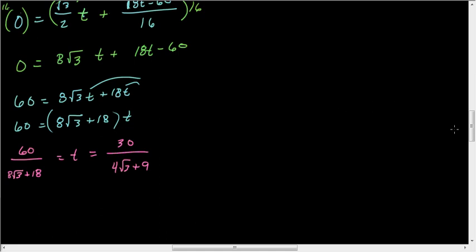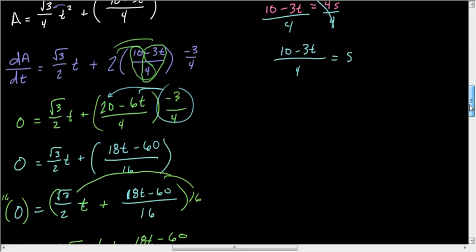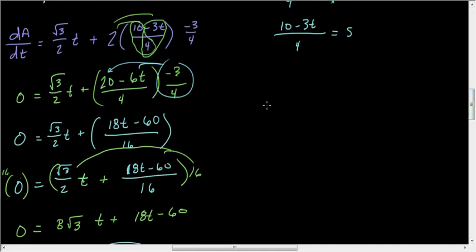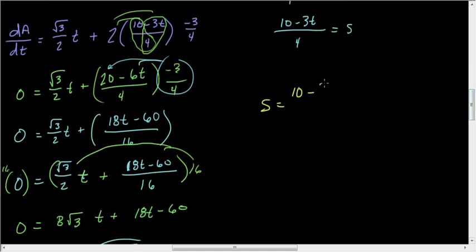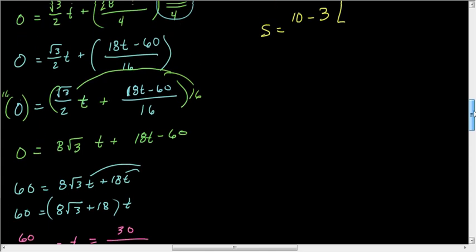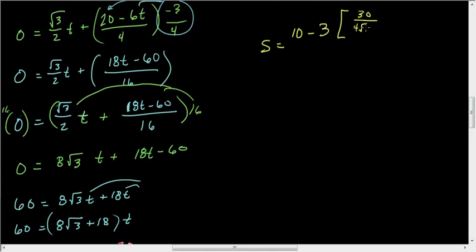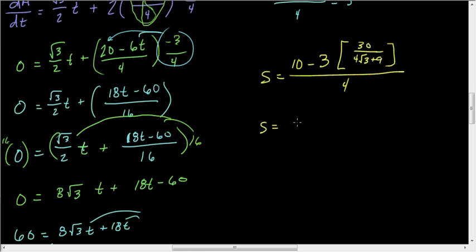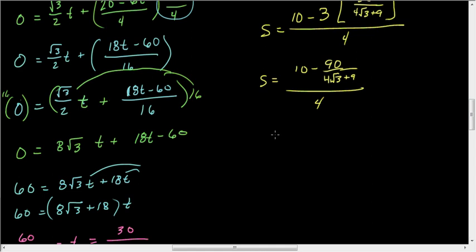So now S is equal to 10 minus 3T over 4. If that's true, then S equals 10 minus 3 times 30 over 4 root 3 plus 9, all over 4. This is going to be S equals 5 halves minus 90 over 16 root 3 plus 36. And what we can do is reduce that.